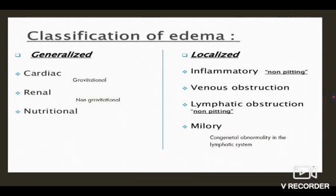Classification of edema based on location. The first is generalized edema, with causes including cardiac edema, renal edema, and nutritional edema. In cardiac edema, the basic mechanism is gravitational force. In renal edema, it is mainly due to non-gravitational mechanisms like nephrotic syndrome, where we have periorbital edema and ascites. Nutritional edema occurs all over the body in case of protein energy malnutrition.